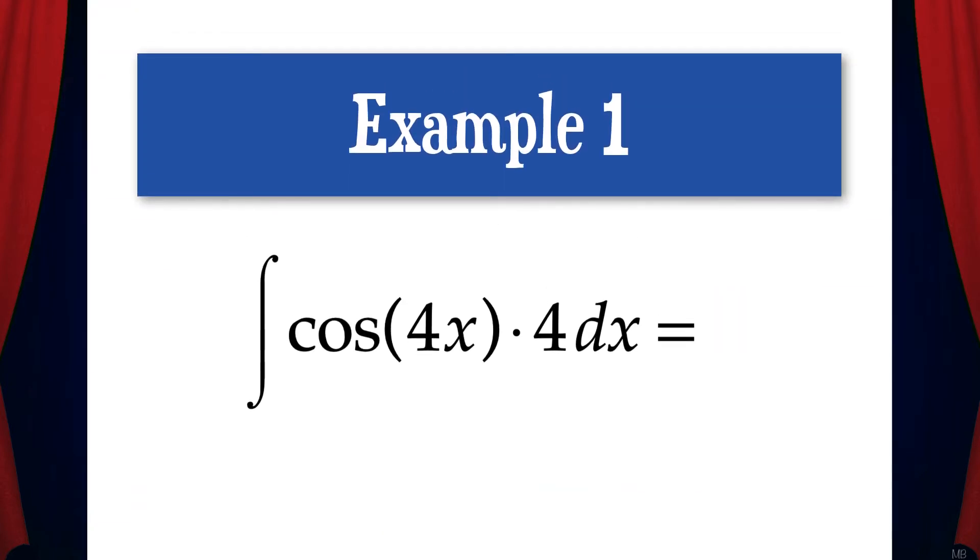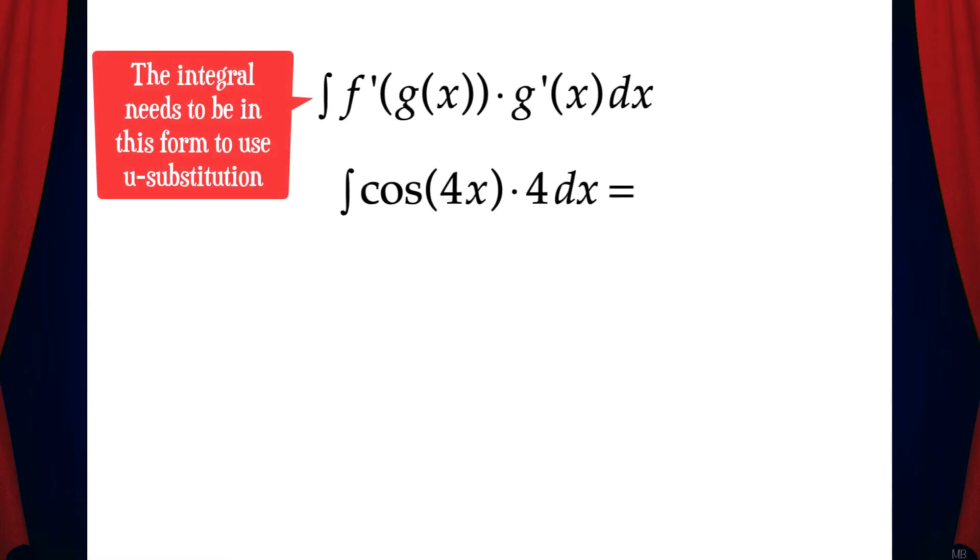Example 1, suppose we want to find the integral of cosine of 4x times 4 dx. In order to use u-substitution, this integral needs to be in the form f prime of g of x times g prime of x dx. Here we can see that we have an inner function, 4x.